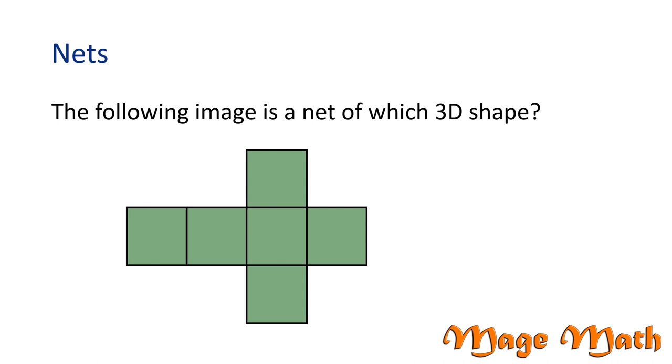The following image is a net of which 3D shape? The figure is comprised of what looks like squares, and there's six of them. If we fold along these marked lines, the net will fold into a cube. This is just one net of a cube. There's several more. Can you find another?